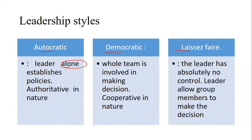In autocratic leadership, no subordinates are involved in taking decisions or naming concerns. Autocratic is very authoritarian - authority rests solely with the leader. A classic example of autocratic leadership is Hitler. Autocratic leaders exercise full control and command.